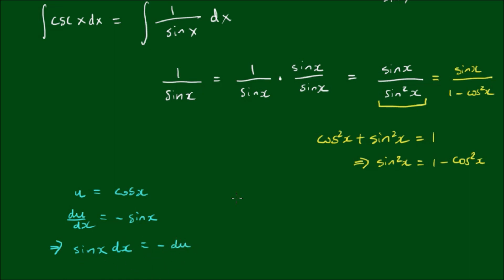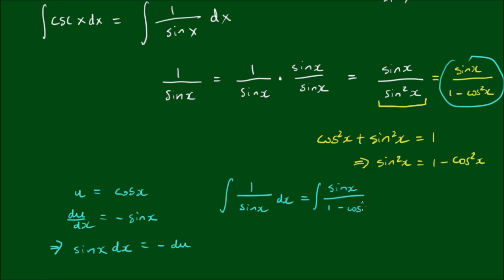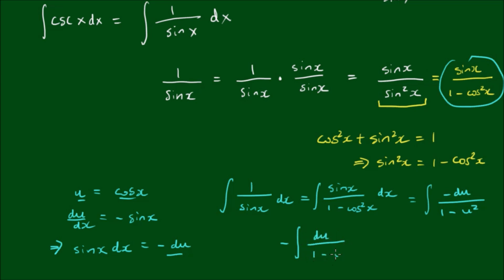So the integral of 1 over sine of x, which equals the integral of sine of x over 1 minus cos²(x) dx, becomes the integral of negative du divided by 1 minus u squared, with cosine replaced by u. Let me write this more neatly as the negative of the integral of du over 1 minus u squared.